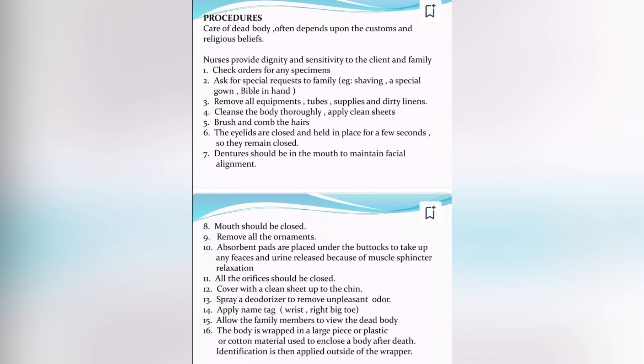The mouth should be closed. Remove all ornaments. Absorbent pads are placed under the buttocks to absorb any feces or fluid released because of muscle sphincter relaxation. All orifices should be packed. Cover the body with a clean sheet up to the chin. Spray a deodorizer to remove unpleasant odor.